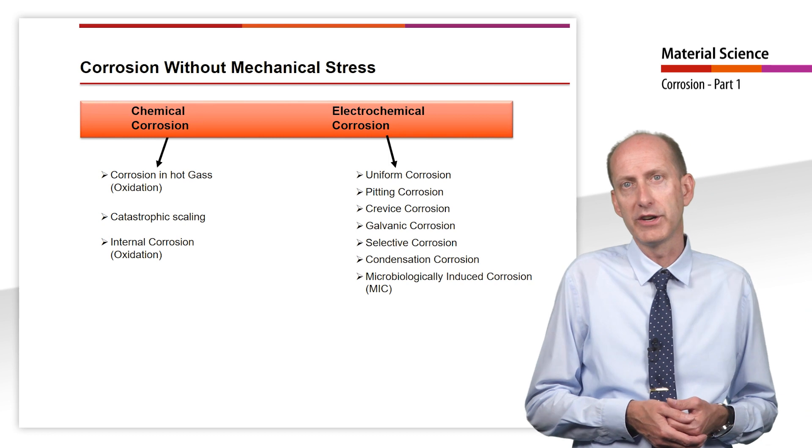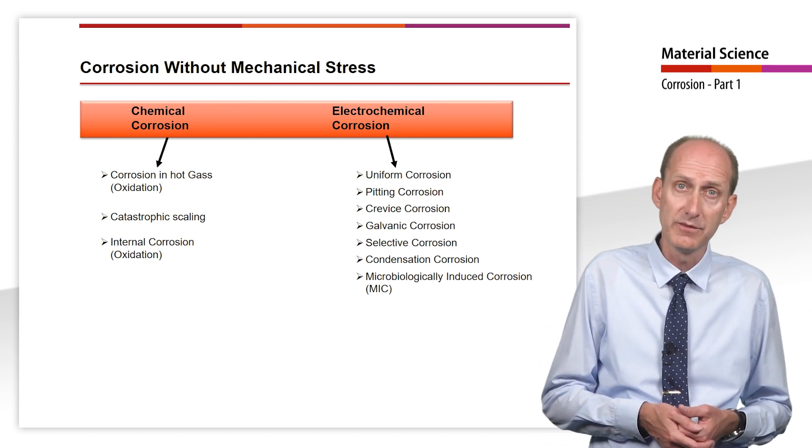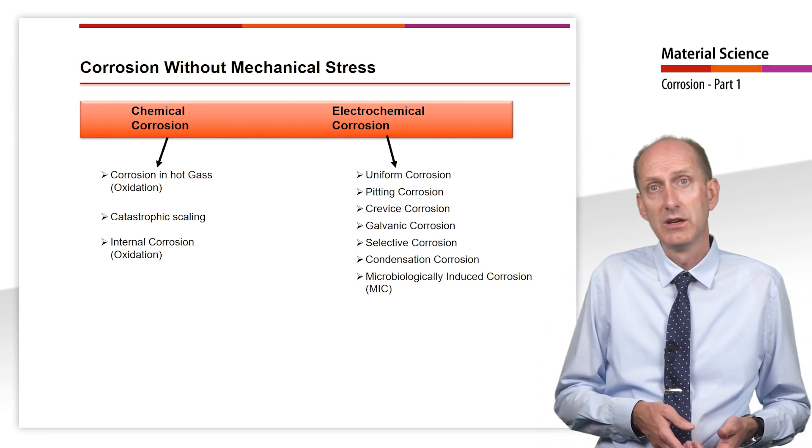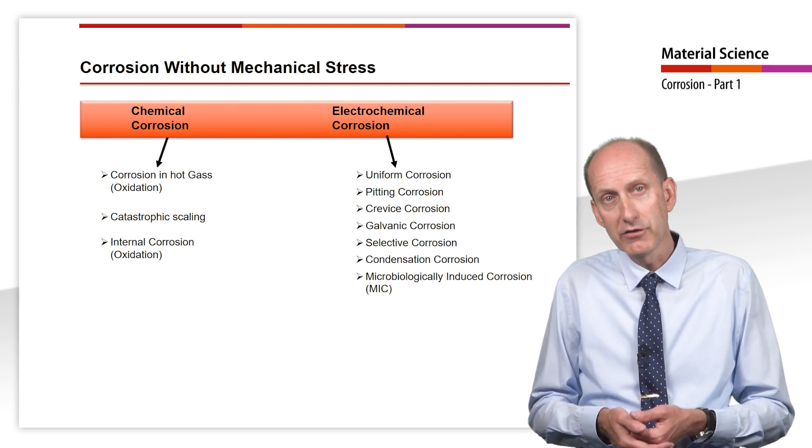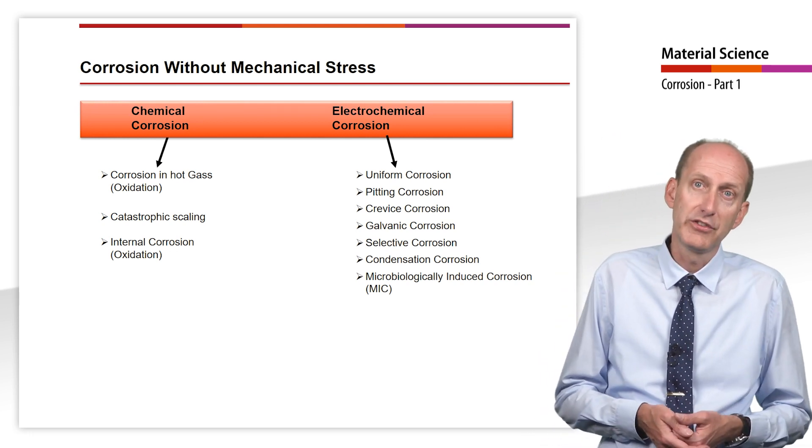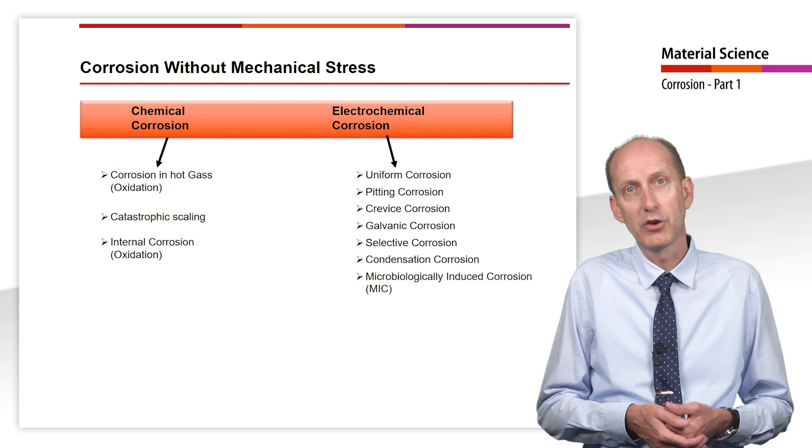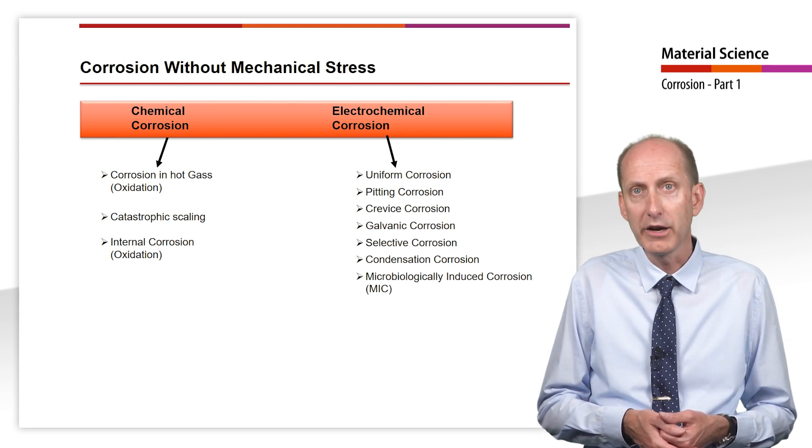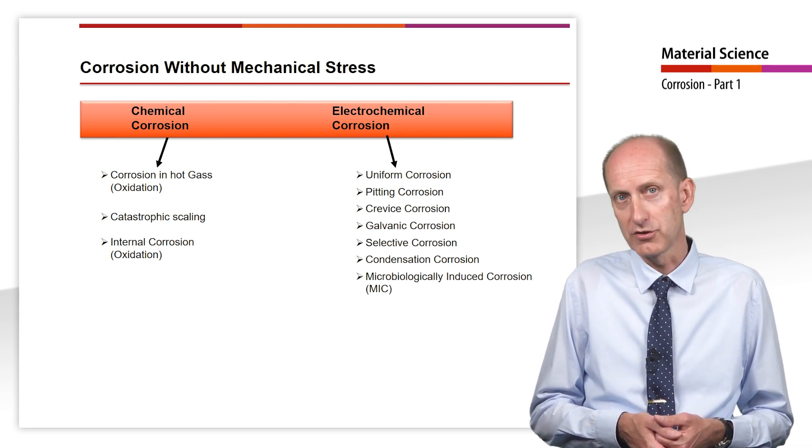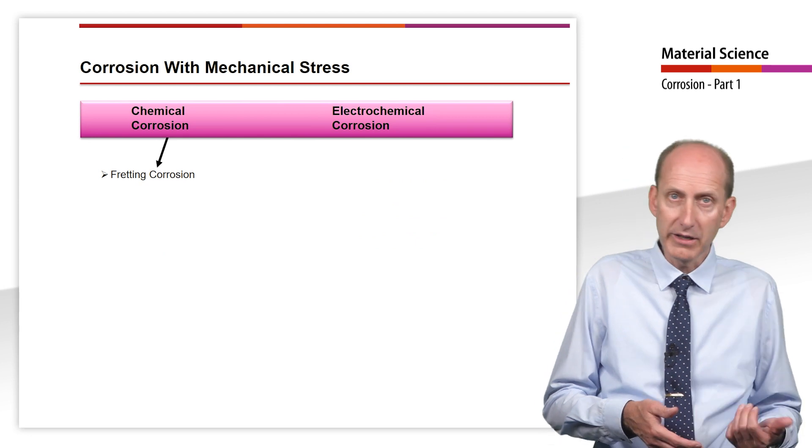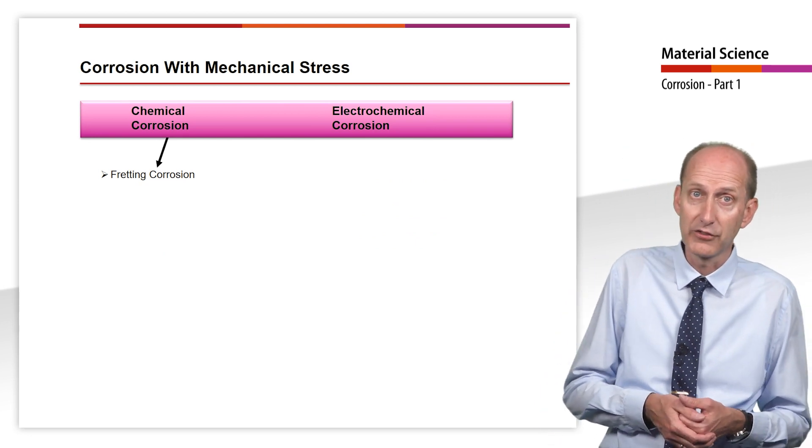The electrochemical forms of corrosion without mechanical stress include uniform corrosion, pitting corrosion, crevice corrosion, galvanic corrosion, selective corrosion, condensate corrosion, and microbiologically induced corrosion.